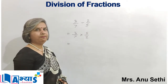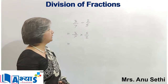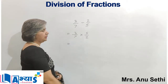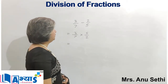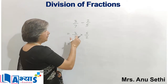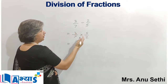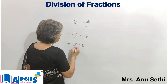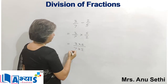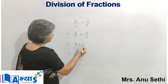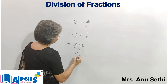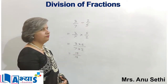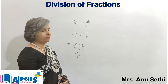Now I perform the multiplication. In the case of multiplication, as discussed earlier, we have to multiply the numerator with the numerator. That means it will be 3 into 5 upon 7 into 2, or we can say 3 fives are 15 and 7 twos are 14. So the answer will be 15 upon 14, which is an improper fraction.